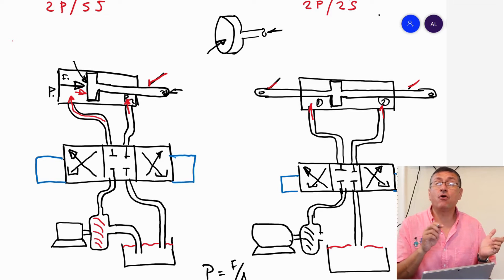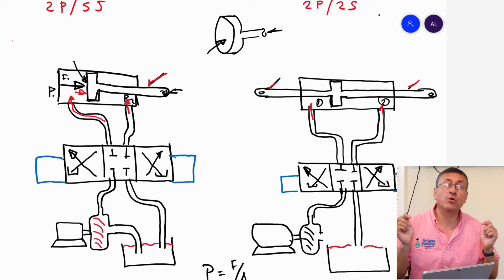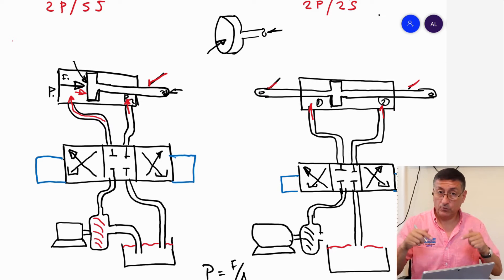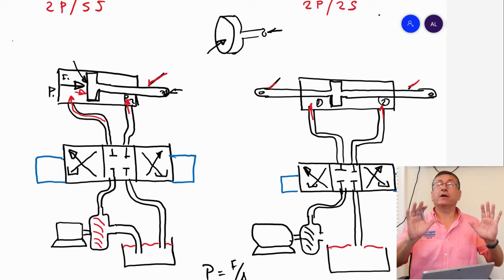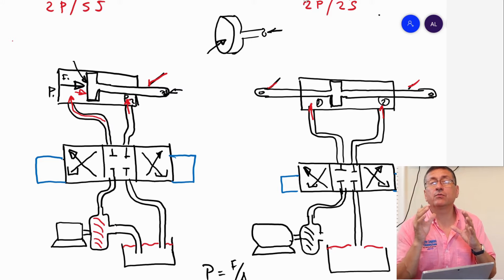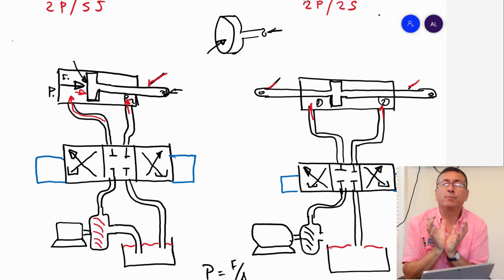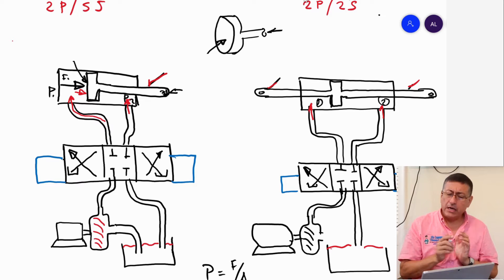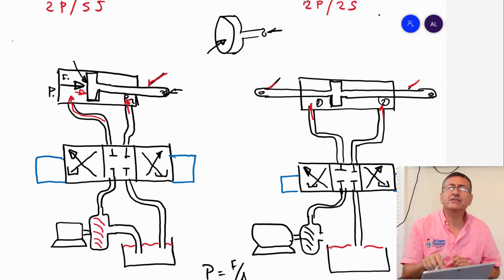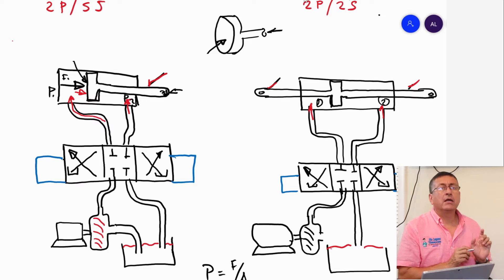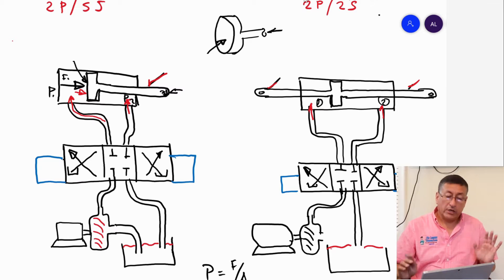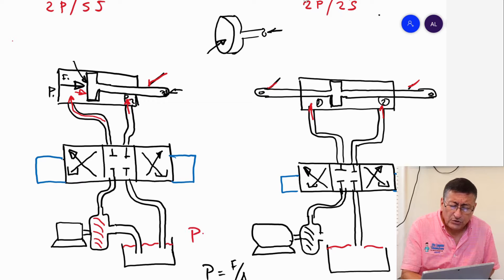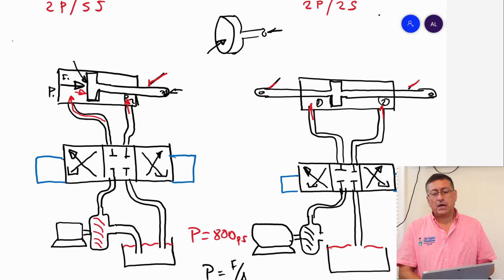The force produced in both directions is equal — we are going to check why. Remember, if we have a hydraulic circuit that is completely closed and hermetic, the pressure is constant. We are going to suppose that in both scenarios the pressure is constant, and for this example the pressure is 800 psi.